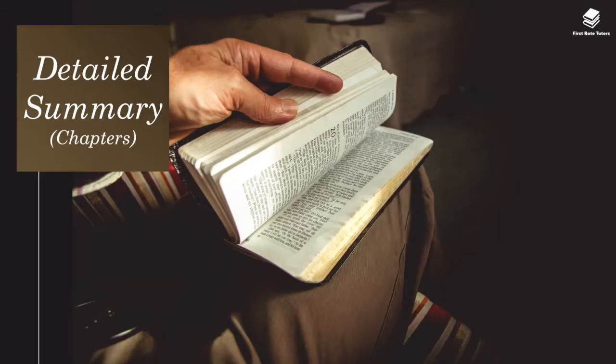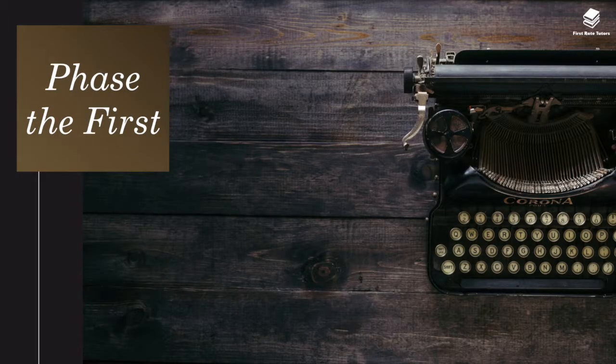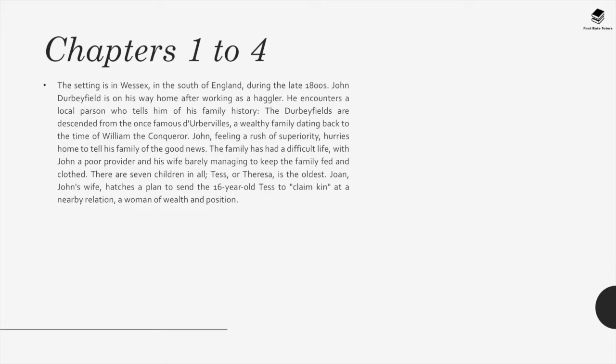Moving on to a detailed summary. Phase the First, Chapters 1 to 4. The setting is Wessex in the south of England during the late 1800s. John Derbyfield is on his way home after working as a haggler when he encounters a local parson who tells him of his family history. The Derbyfields are descended from the once famous D'Urbervilles, a wealthy family dating back to William the Conqueror. John, feeling a rush of superiority, hurries home to tell his family the good news.